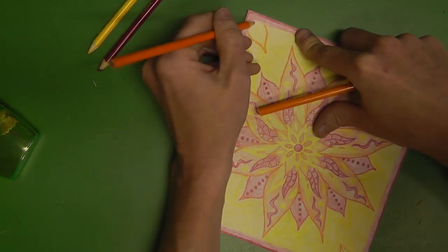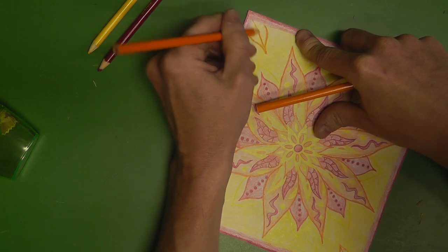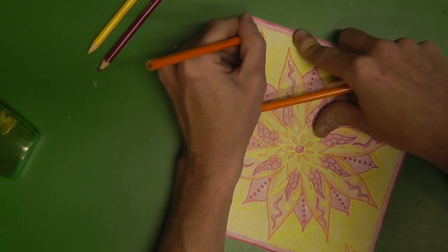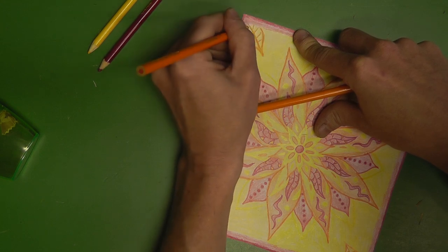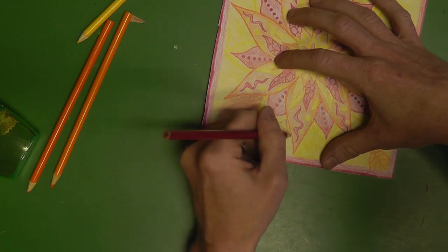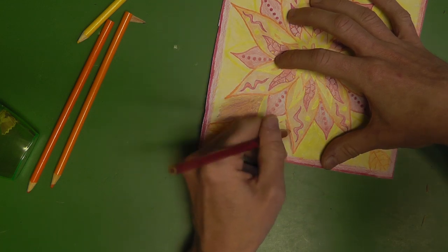I decided to just randomly add some leaves coming in from all four corners of the border, and give them some leaf-like detail. And then I simply colored in all the four leaves orange.